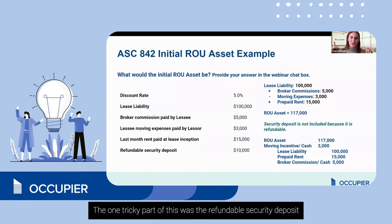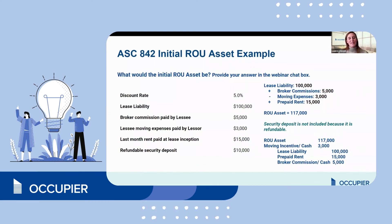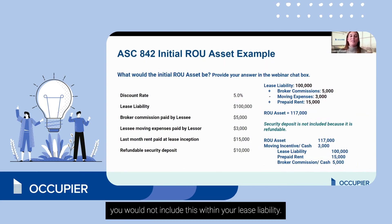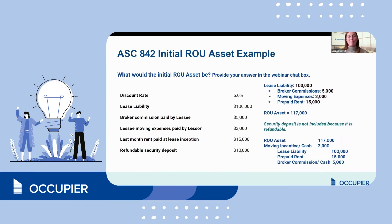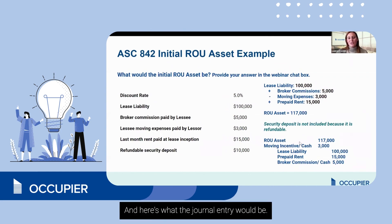The one tricky part was the refundable security deposit. Because it is refundable, it would not be included within the lease liability — it would be considered an other asset for your company. That rounds out to $117,000, and here's what the journal entry would look like.